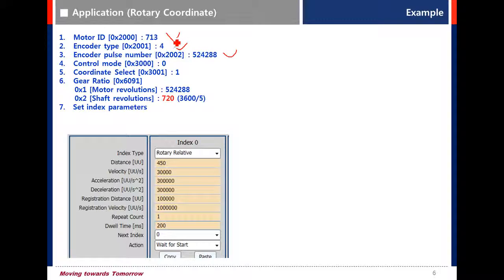The value of multi-turn type is 4. Encoder path number is 524288 because it is 19 bit, so input the value 524288. Actually, for the multi-turn motor, these parameters are set automatically.